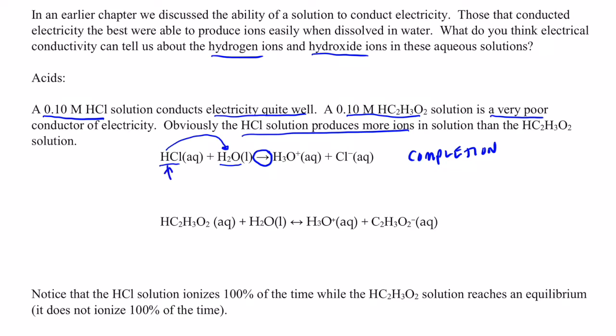We say that this goes to completion. Almost all of the HCl molecules, when placed in water, will do what I just showed you. They will produce a bunch of hydronium ions, or hydrogen ions for short, and chloride ions. Since they produce so many of them, we call HCl a strong acid.